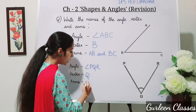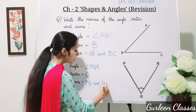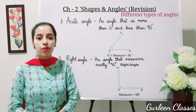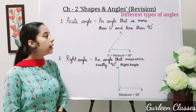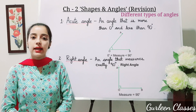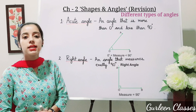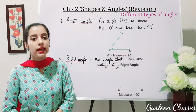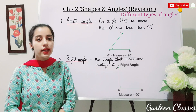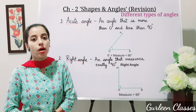Now let us discuss the different types of angles. Number one: Acute angle. An angle that is more than 0 degrees and less than 90 degrees. Students, here you can see an acute angle — it is more than 0 degrees and less than 90 degrees. For example, 60 degrees is more than 0 degrees but less than 90 degrees, so it is an example of an acute angle.